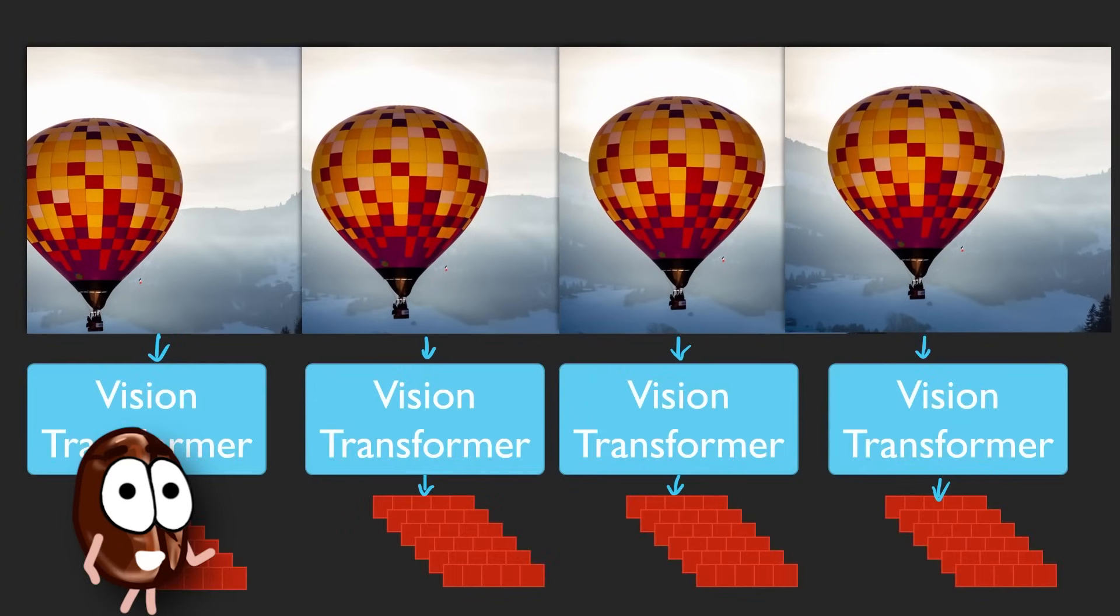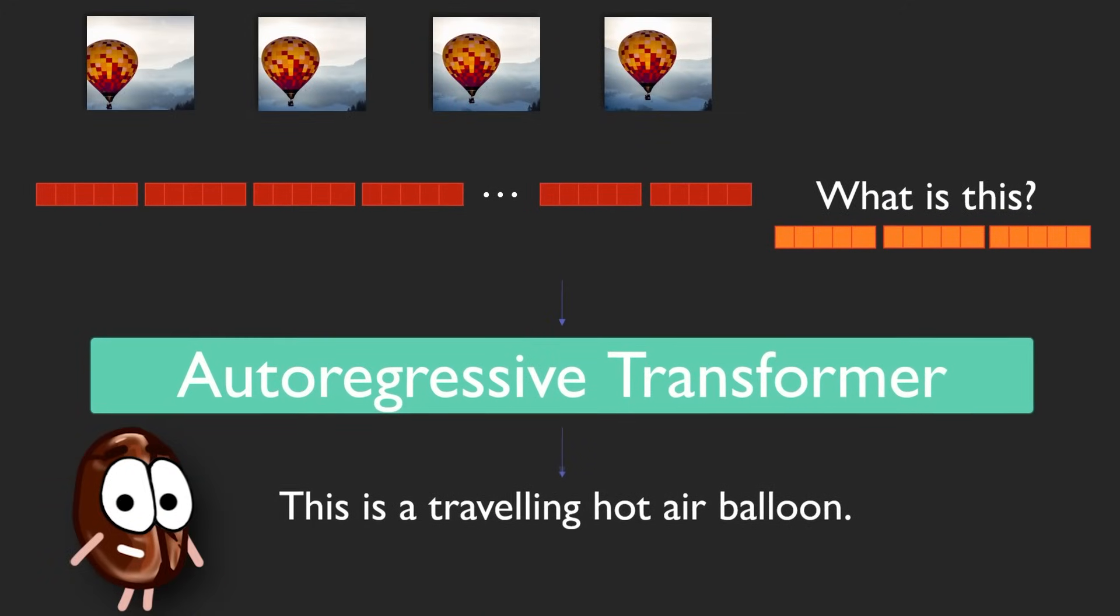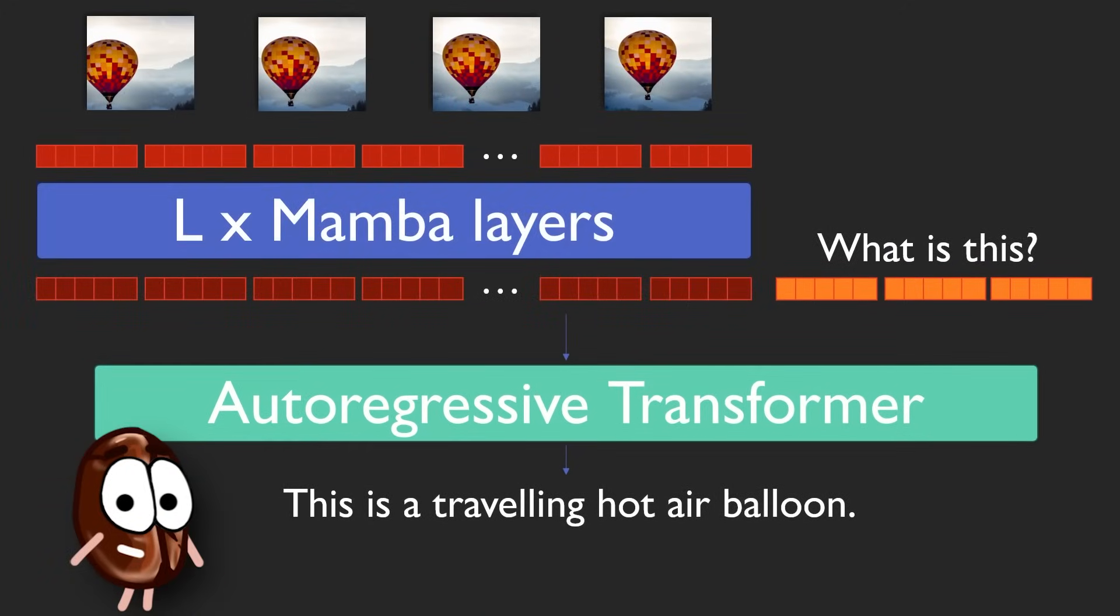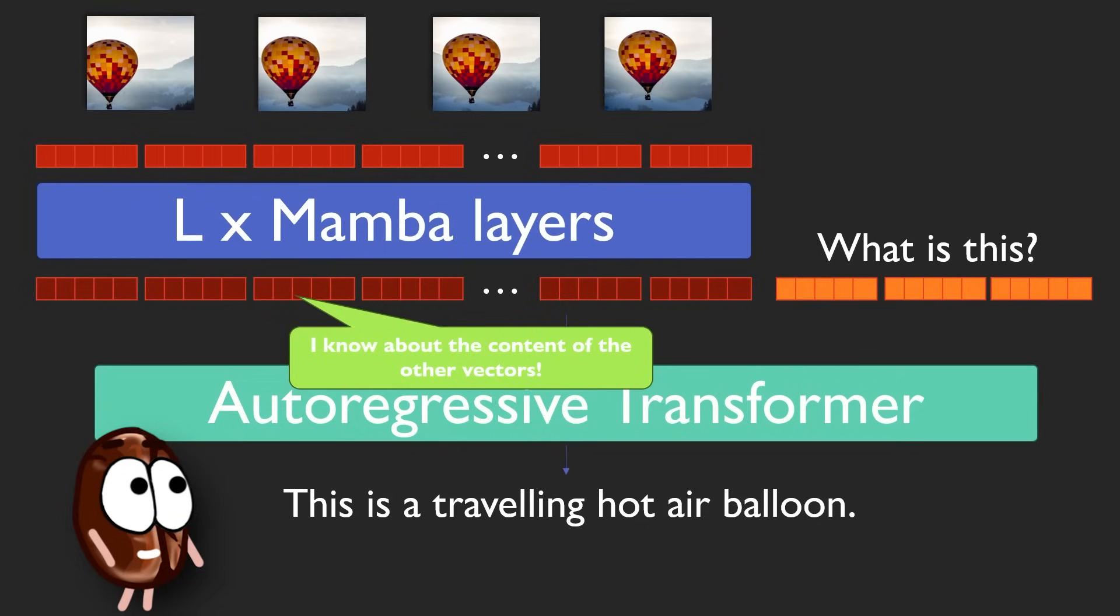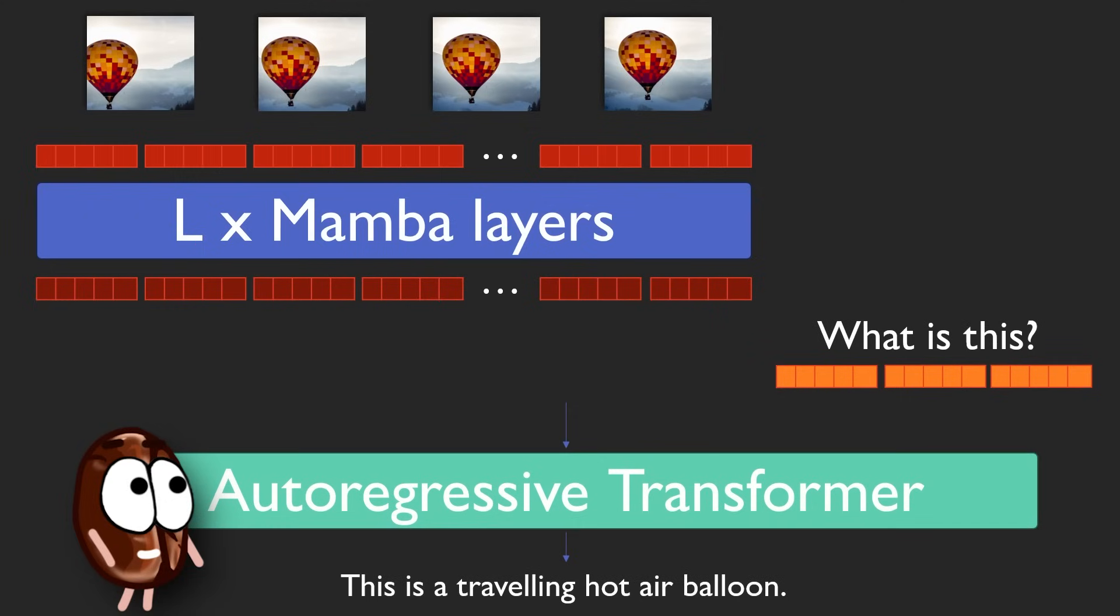Instead of processing every frame in full detail, Storm does the following: After the vision transformer, before anything reaches the language model, all image tokens pass through Mamba layers—a recent sequence model built for efficient long context processing. These layers scan the entire video sequence, blending information from past and future frames into each token. The result: every token now carries contextualized knowledge from the whole video, not just from its own frame.